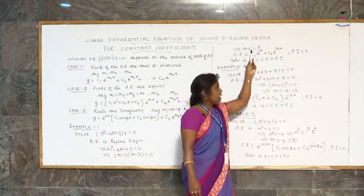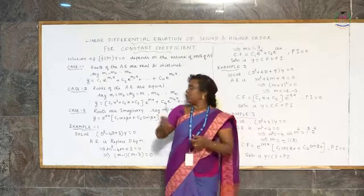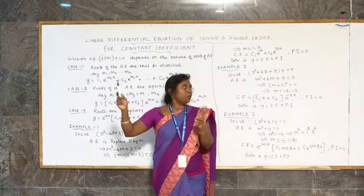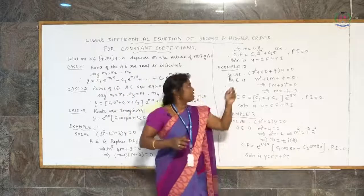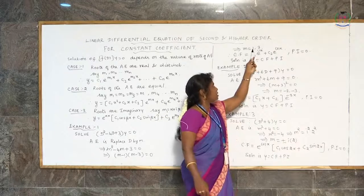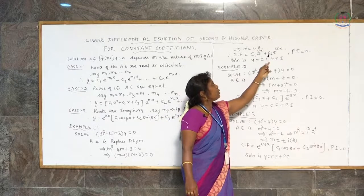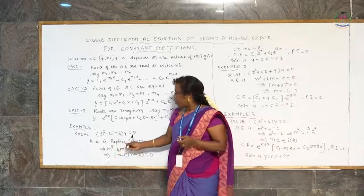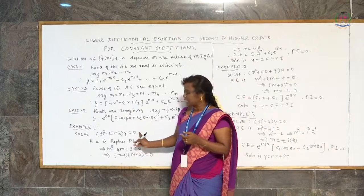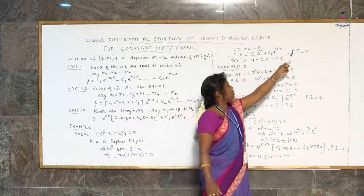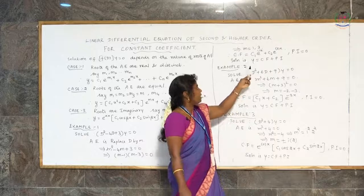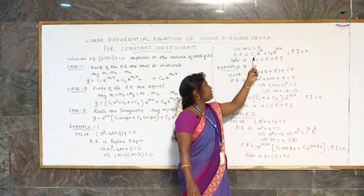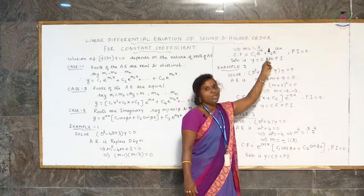The roots are real and distinct, so according to Case 1 we write the complementary function as c₁e^x plus c₂e^(3x). In this problem there is no particular integral since there is no function on the right-hand side; particular integral equals 0. The general solution is y equals complementary function plus particular integral, therefore y equals c₁e^x plus c₂e^(3x).